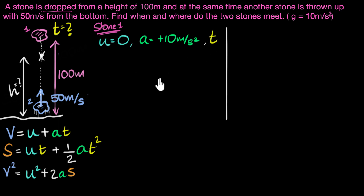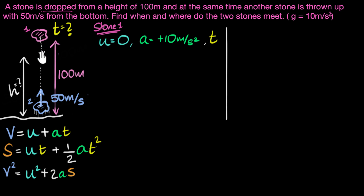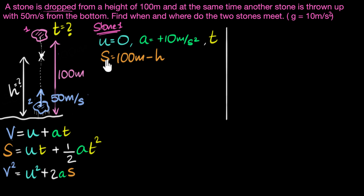Time T is unknown — we need to calculate it. For displacement: we're taking the meeting point as height H, and the stone starts at 100 meters. So in time T, the displacement of stone one from top to meeting point will be 100 minus H. We don't know or care about its final velocity.